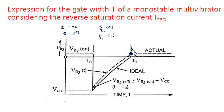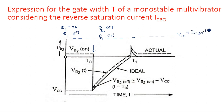Now, because the reverse saturation current of Q2 is present, it adds to the original voltage. Previously, the capacitor had to charge up to VCC. But now, the capacitor has to charge up to VCC + ICBO × R. VCC is the supply voltage and ICBO × R is the voltage drop due to the reverse saturation current flowing through resistance R. So VCC + ICBO × R is the new final level the capacitor must reach.